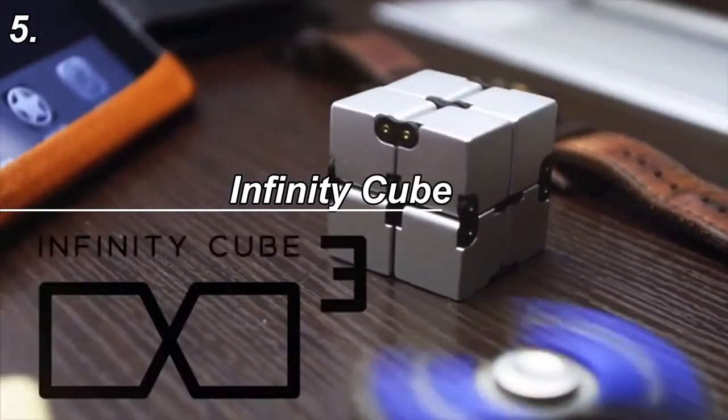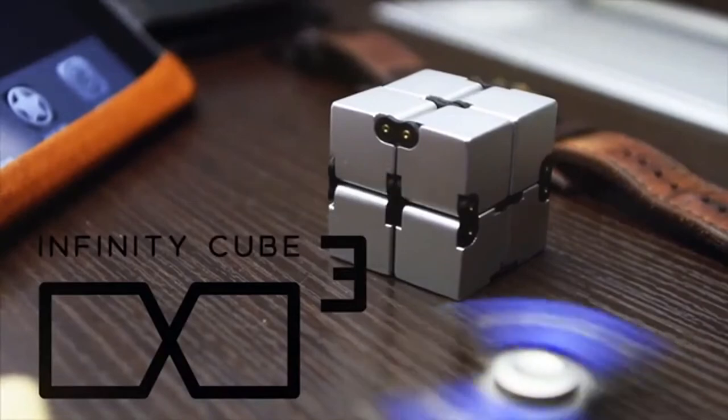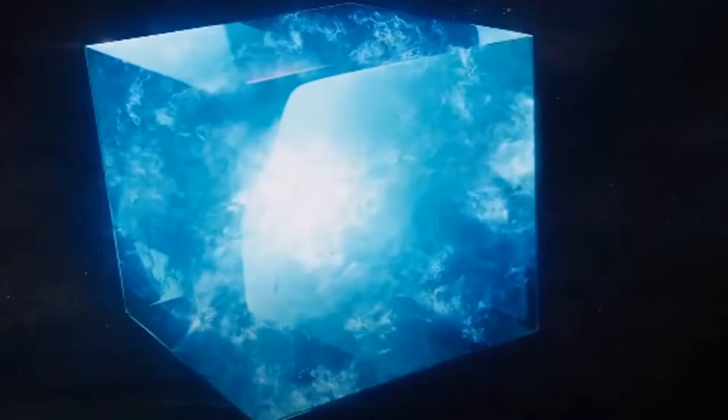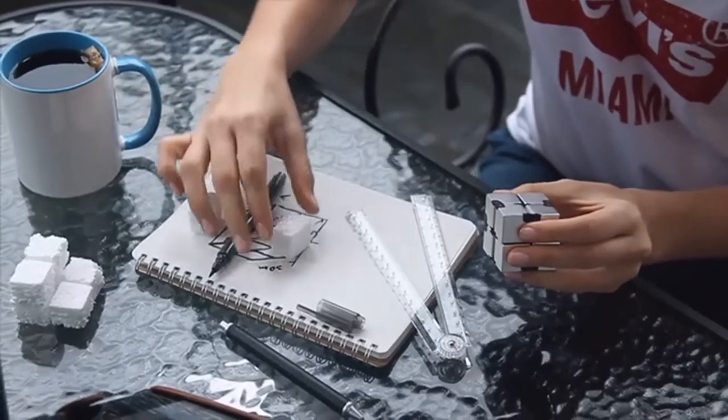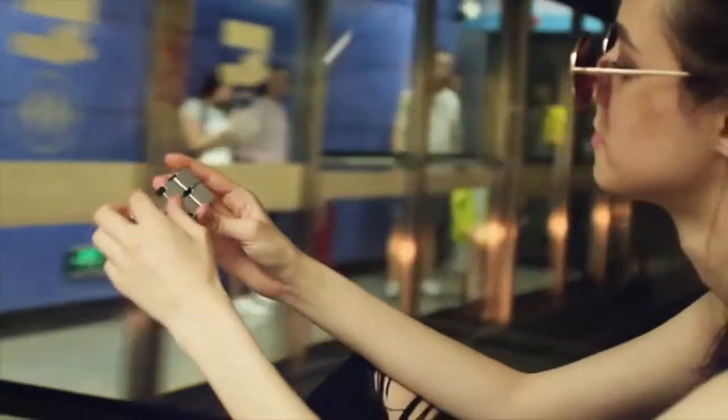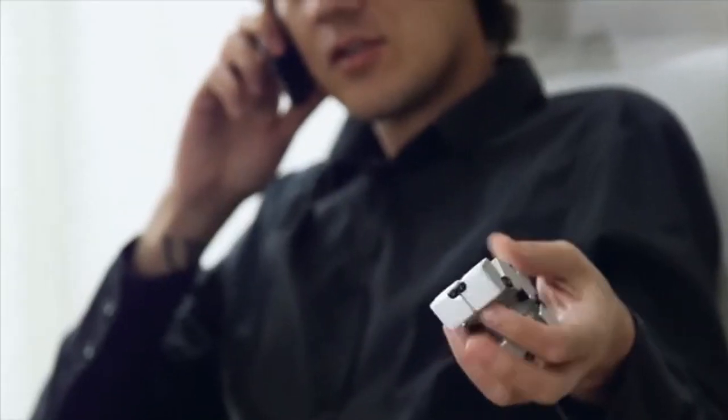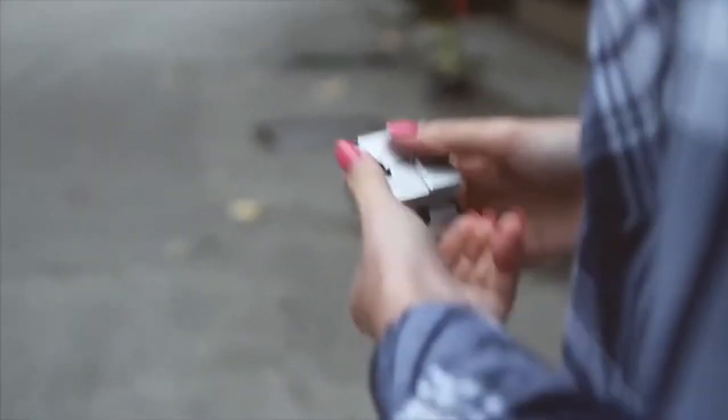Infinity Cube. The new fidget toy comes in the form of a cube-like structure. Somehow it reminds me of the Tesseract from Marvel. Unlike the Tesseract that keeps on folding into itself that resembles a 4D structure, the Infinity Cube can't do that, but can be folded as many times as you want in different directions due to its unique design.